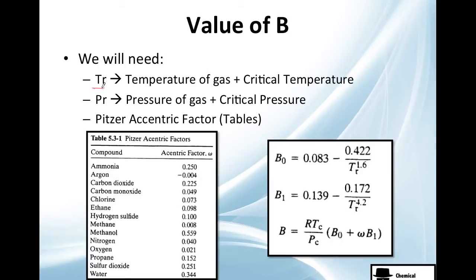So remember, Tr is temperature of the gas and the critical temperature. You need the Pr, which is the pressure of the gas plus the critical. It's not actually like we are not adding this, it's only what do we need. We will need the temperature of the gas, pressure of the gas, critical temperature of the gas, and critical pressure of the gas. And this little guy, Pitzer acentric factor, which essentially just says how spheric is our substance.